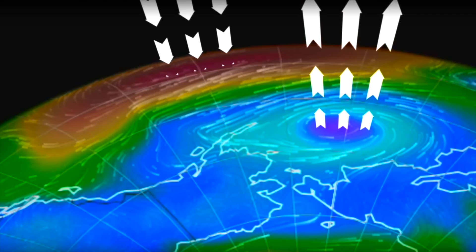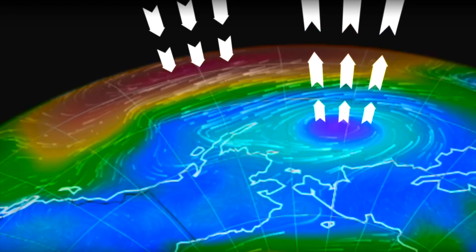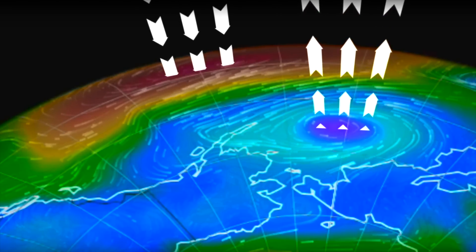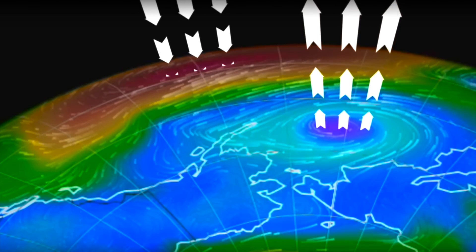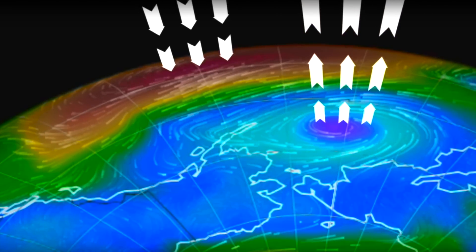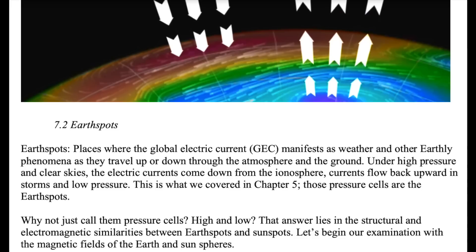A brief introduction here will be exceptionally helpful in seeing connections that aren't otherwise so easy to see. As we described in chapter 7 of our book, Weatherman's Guide to the Sun, the Earth and the Sun have remarkable electromagnetic and physical similarities.